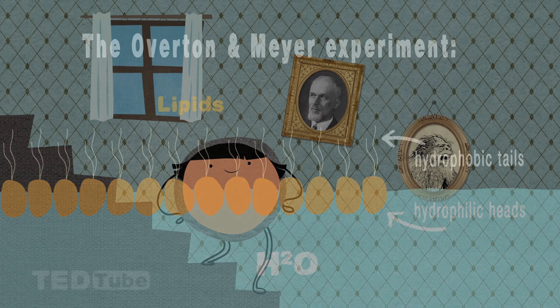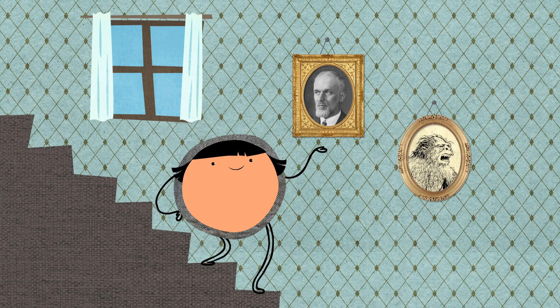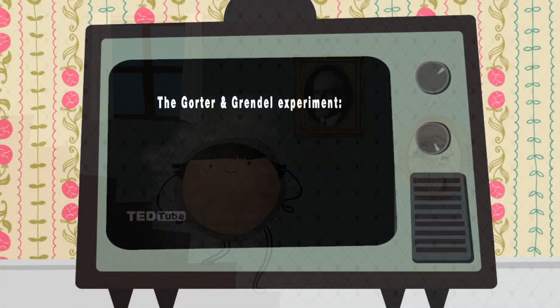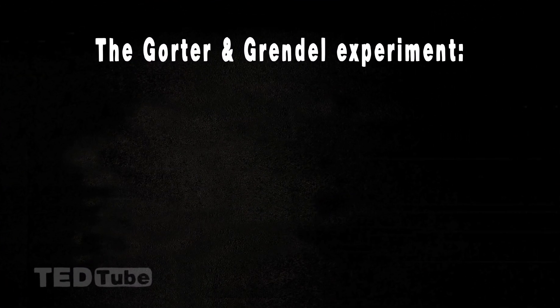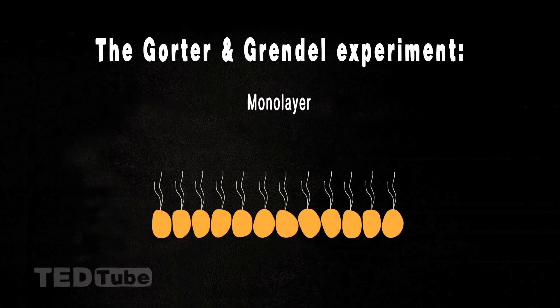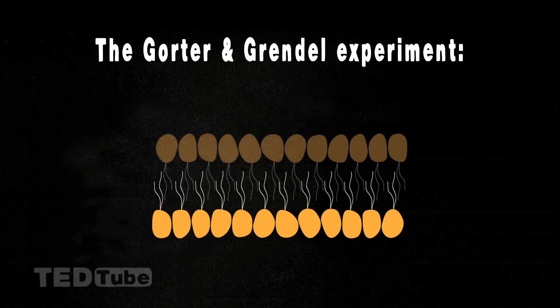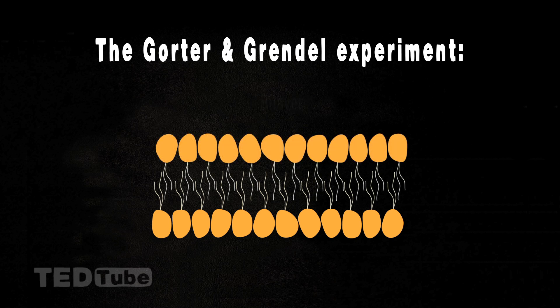In 1925, two scientists, Evert Gorter and Francois Grendel, pushed our understanding further. They designed an experiment meant to test whether cell membranes are made of only one layer of lipids, a monolayer, or two layers stacked on top of one another, called a bilayer.